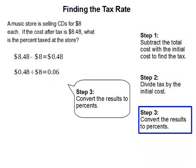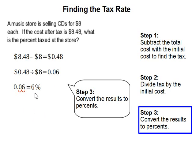Step 3: convert the result to a percent. To convert a decimal to a percent, you move the decimal place to the right two times, and that gets you 6, which is 6%, and that completes our problem.